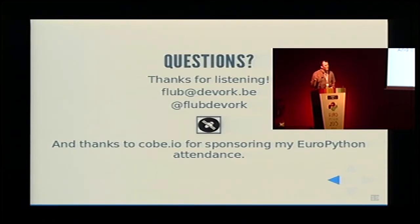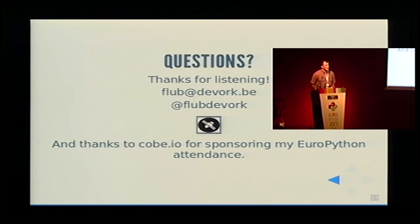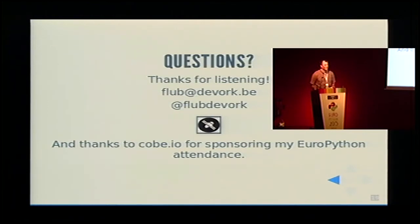At the end of the day, Pluggy doesn't really do anything like type dispatch. But your implementation can just say, I don't care if it's this type, and just return None, and then it doesn't influence anything.